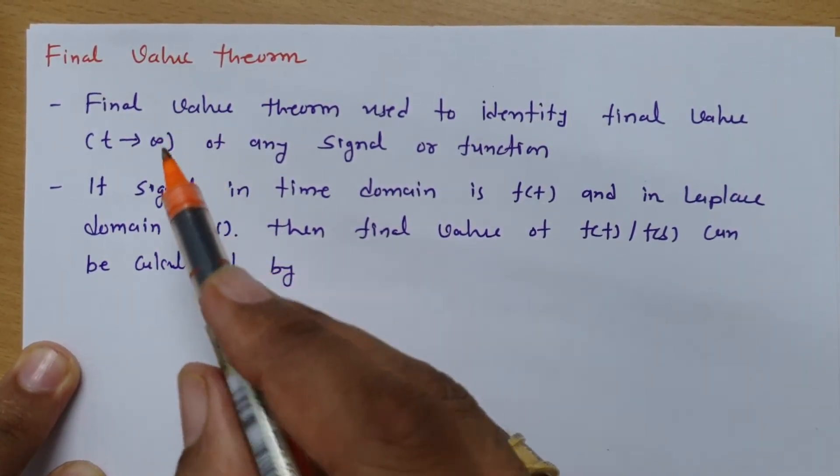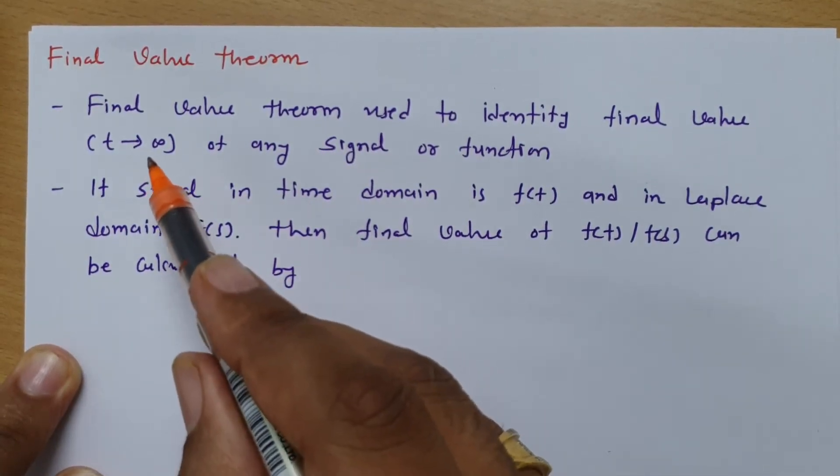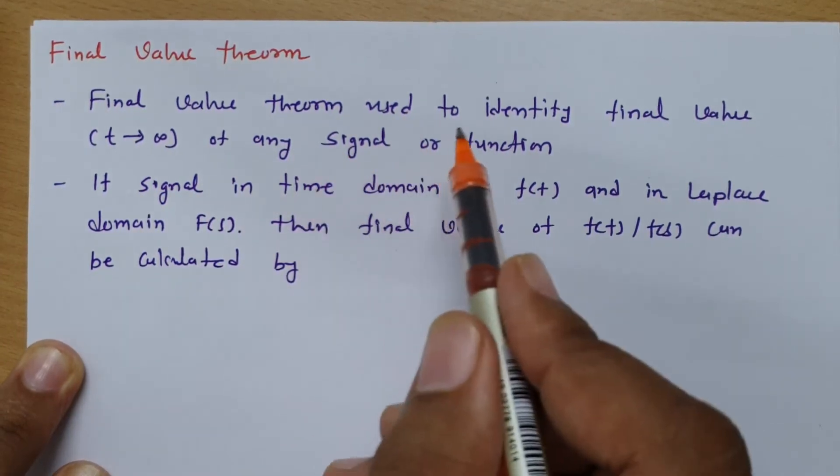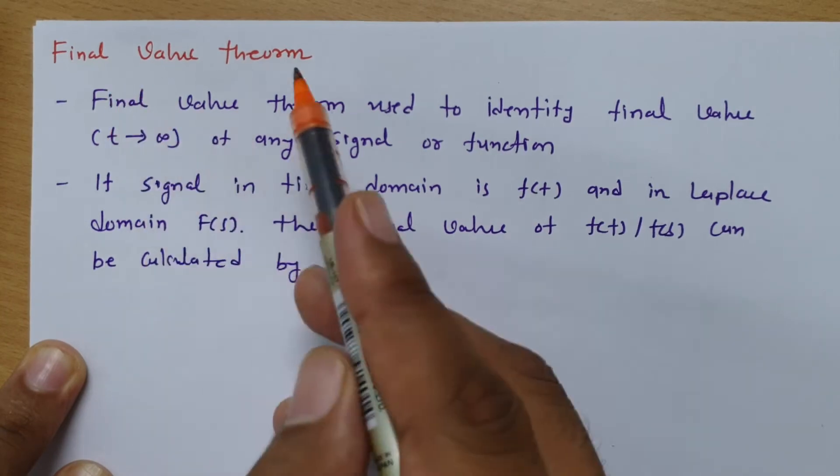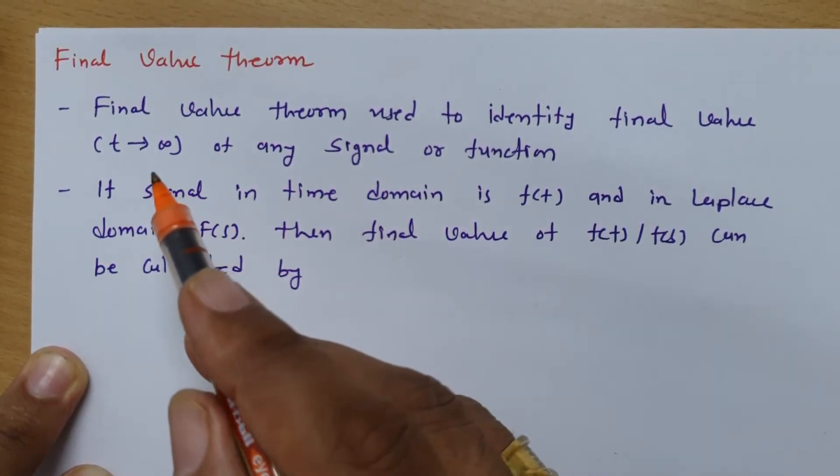Final value theorem is used to identify the final value at time t equals infinity, that is, what is the value of a signal or function. Ultimately, final value theorem is utilized to identify the value as time t tends to infinite.